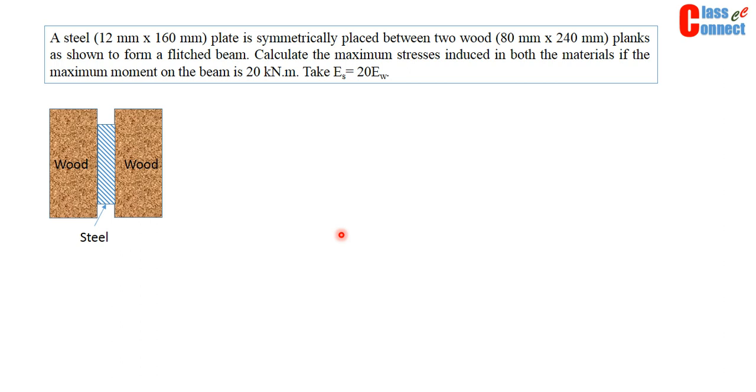The other method we can also use is the direct method without converting this into equivalent section. We can directly solve this. We have to make use of basic principle that moment is the resisting moment by wood section and the sum of resisting moment by wood section and steel section.